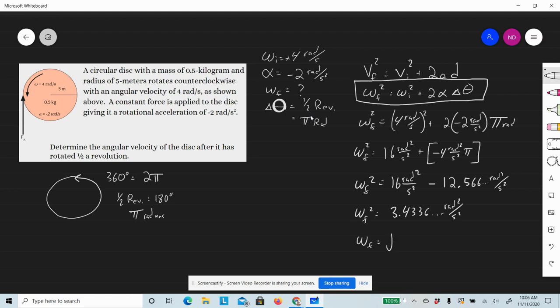Omega_f equals the square root of that, and so we get the final velocity to be 1.85 radians per second.